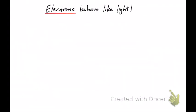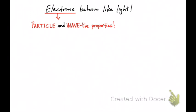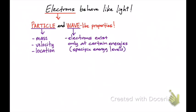Electrons basically behave like light — they have a lot of things in common. Electrons themselves actually have wave-like properties and also particle-like properties. Electrons have particle-like properties in that they have mass, velocity, and location. They also have wave-like properties in that they exhibit amplitude, frequency, and wavelength.